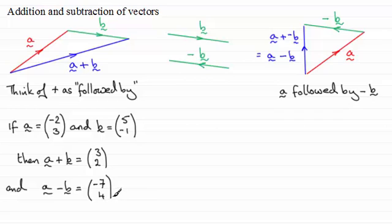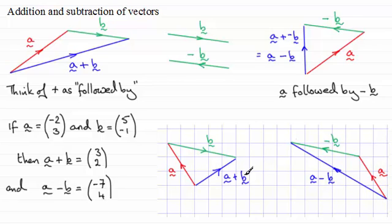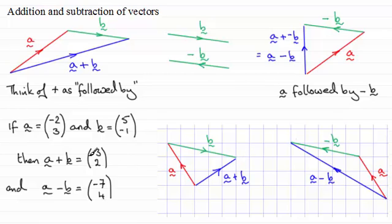When it comes to displaying these results graphically, we take the vectors and lay them out on the grid. Vector a is (-2, 3) and vector b is (5, -1). When we add these two vectors together — a followed by b — we create this vector, and you can see it checks out with the result (3, 2): three across, two up.